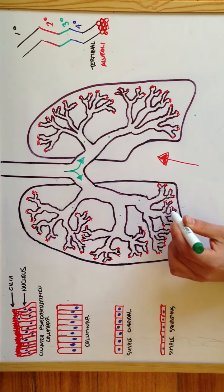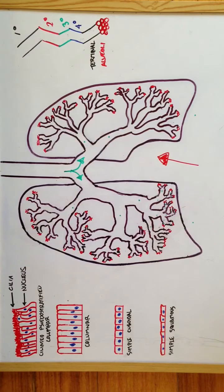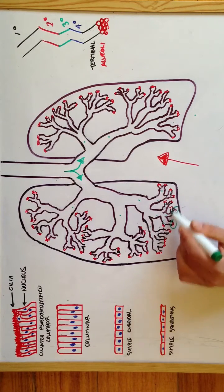Terminal bronchioles, which are these tiny little passages here, and then into tiny little air sacs called alveoli, where gas exchange takes place.